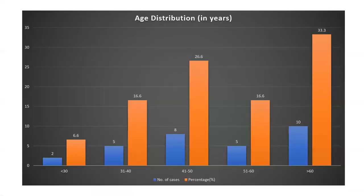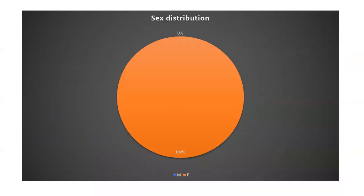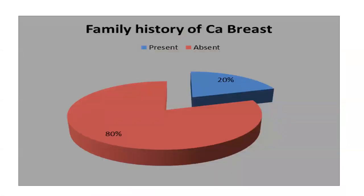In the results: the age distribution of the study ranged from 21 to 78 years. The maximum number of patients were above 60 years of age. The next highest group was 41 to 50 years, comprising 26% of the study population, while the least were below 30 years. All patients were female. Out of 30 cases, only 6 patients, forming 20% of the study population, had a family history of breast cancer, while the remaining 24 had no such history.